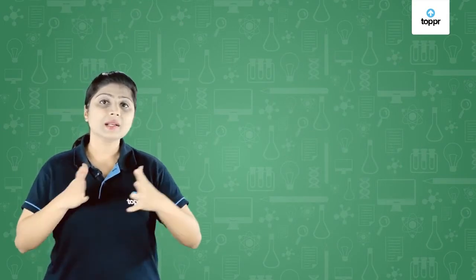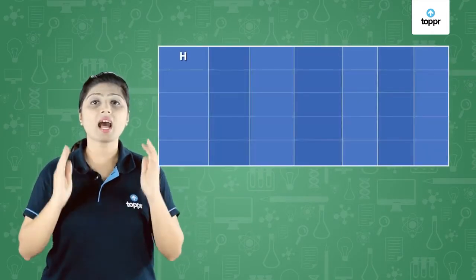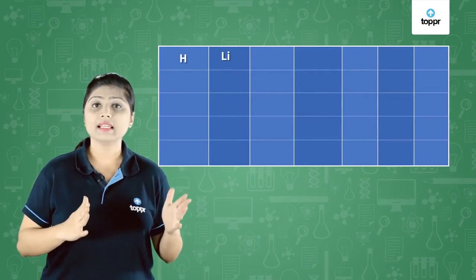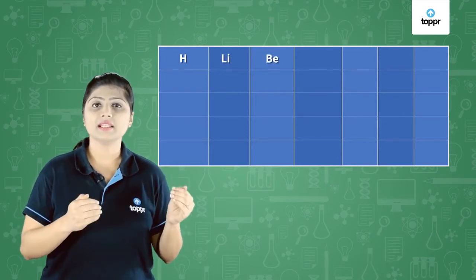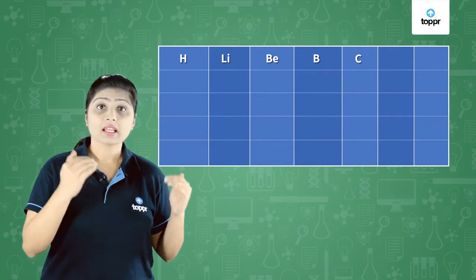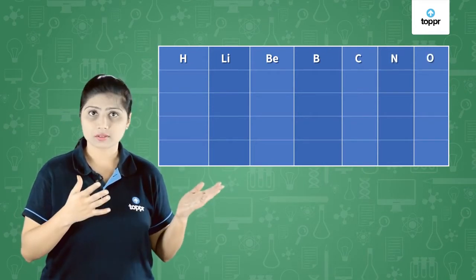He started placing elements in the increasing order of their atomic masses. He placed hydrogen, then lithium, then beryllium, boron, carbon, nitrogen, and oxygen.